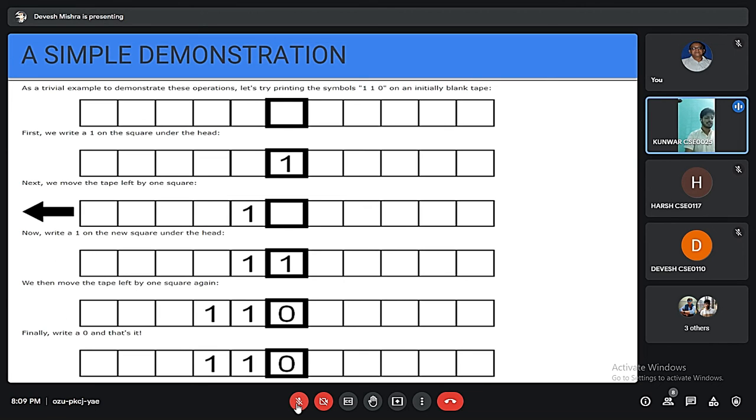Let's discuss a sample demonstration on the Turing machine. As a trivial example to demonstrate these operations, let's try printing the symbol 110 on an initially blank tape. First, we write 1 on the square under the head. Next, we move the tape left by one square. Now write 1 on the new square under the head. Then we move the tape left by one square again. Finally, write 0 and that's it.